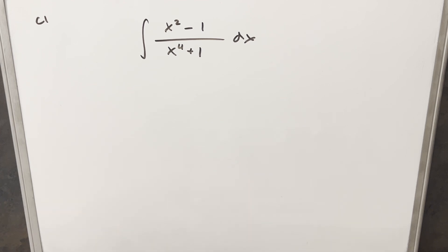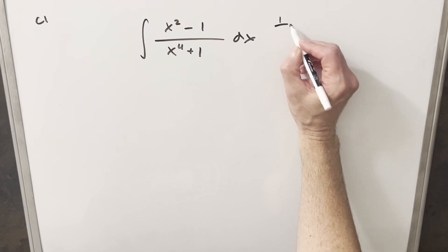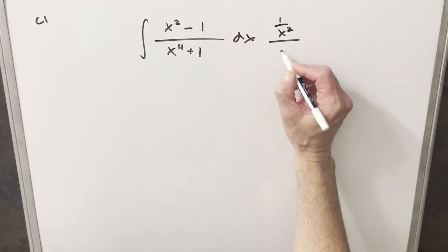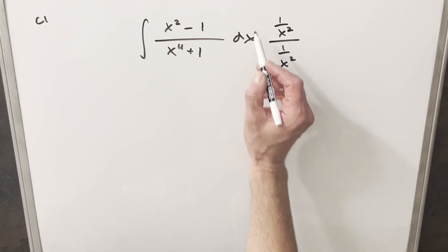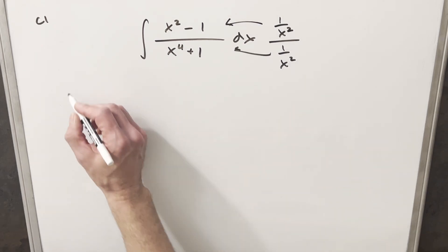Okay, to get started with this, I don't have too many good ways to approach this. My favorite way to handle a situation like this is to multiply the numerator and denominator by 1 over x squared. What I'm trying to do here is set up a u substitution in the numerator and denominator. So let's see what happens.